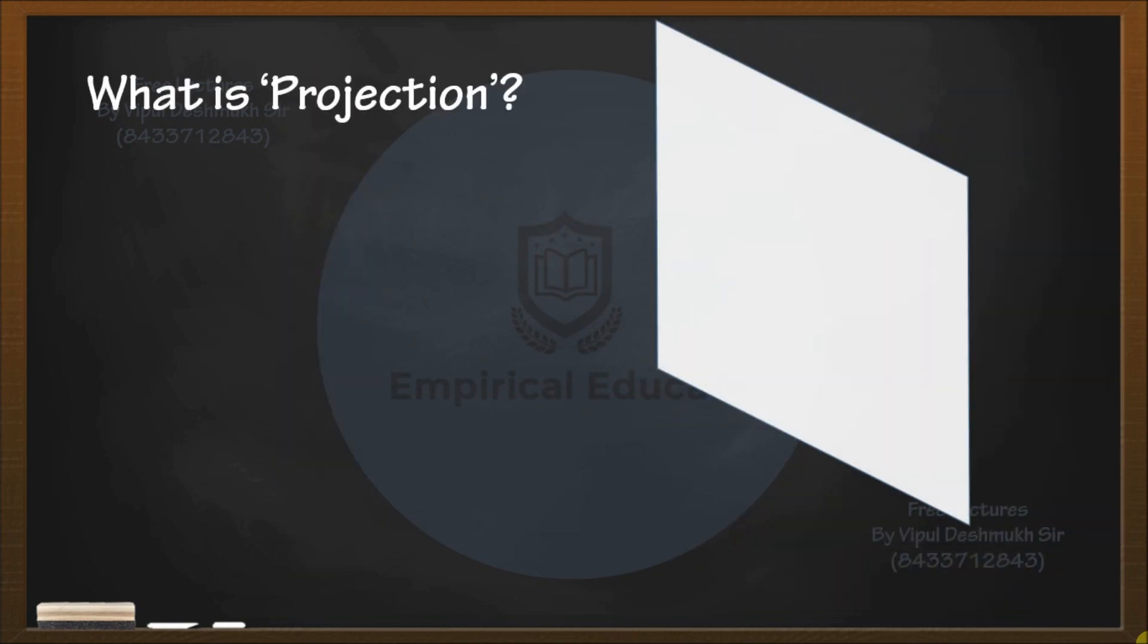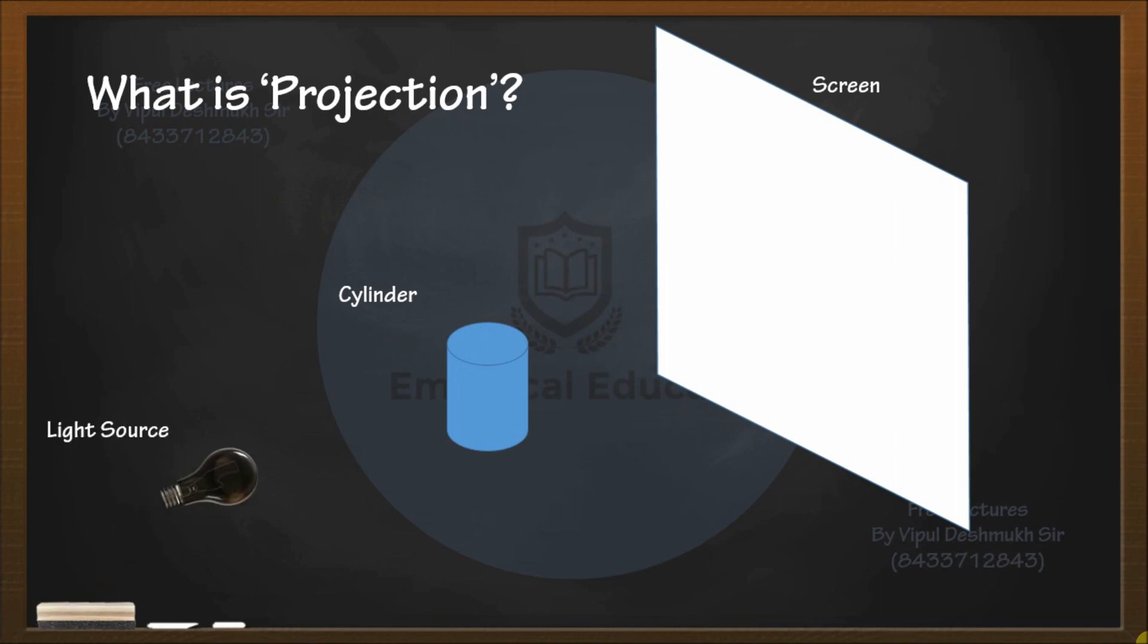To understand projection, let us consider a screen in a dark room. I am placing a cylindrical object in front of that screen and keeping a light source. If I switch on the light source, the screen will get illuminated but there will be a shadow of the cylinder. This shadow of the cylinder is nothing but the projection of the cylinder on the screen. This is what projection is.